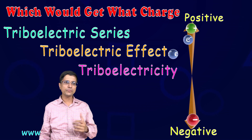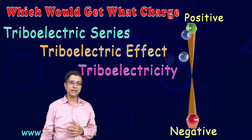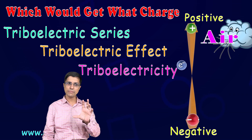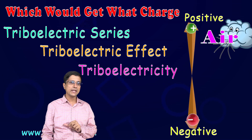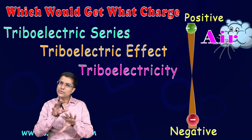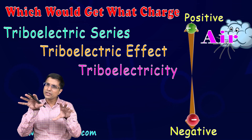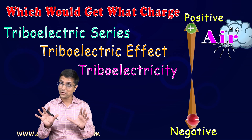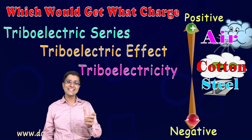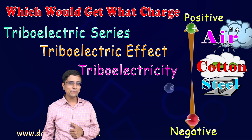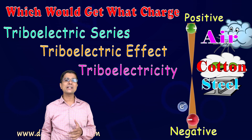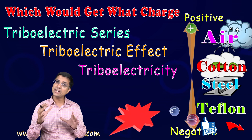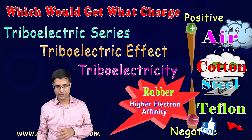At the top are those materials which become highly positive — air is an example, so you should remember this. In the middle are those materials which tend to stay neutral; they don't get any kind of charge — they are very neutral, they are political. Cotton and steel are examples of this. At the bottom are materials like Teflon, which become very negative in charge when they are rubbed together.